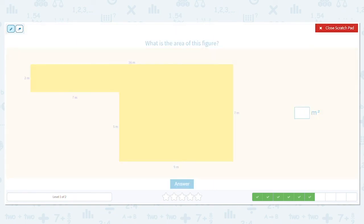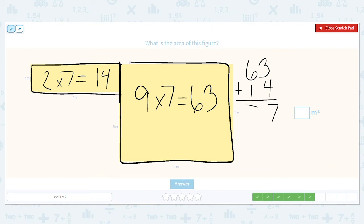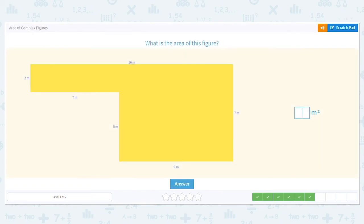I'm going to cut this one right here. So I have 9 times 7, which equals 63. And then I have the smaller rectangle, which is 2 times 7. What is 2 times 7? That's 14. And then I put it together. 63 plus 14 equals 77 meters squared.